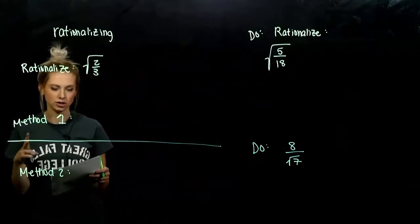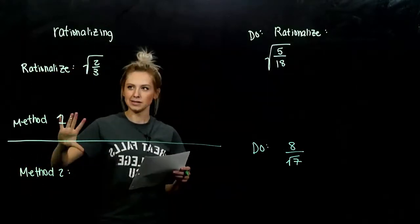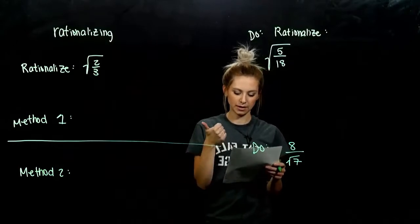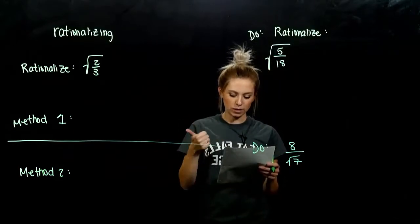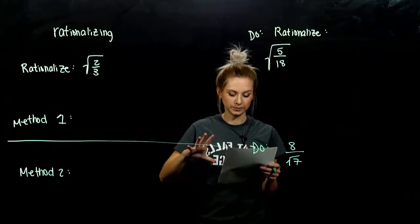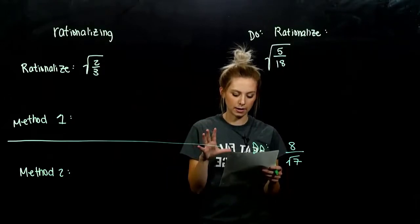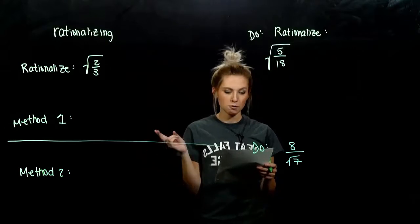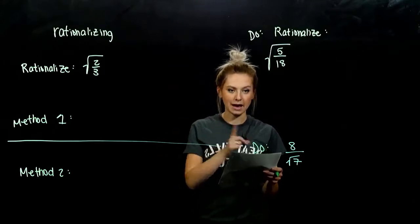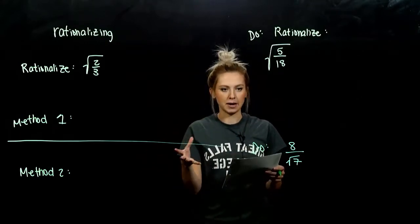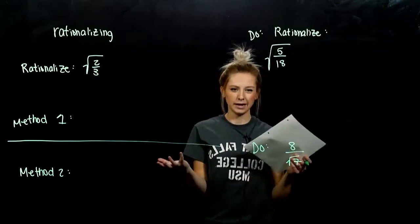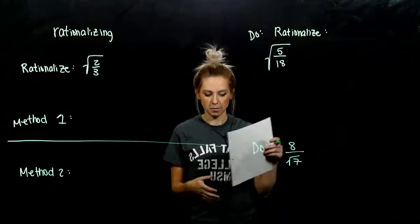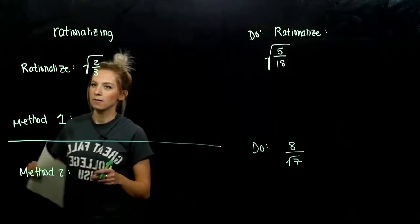There are two different ways that we can rationalize a denominator. The first method: we multiply by one underneath the radical to make a denominator that is a perfect square. The second method: we multiply by one on the outside to make the denominator a perfect square. In either case, we're working towards making the denominator a perfect square, and we're multiplying by a factor of one.